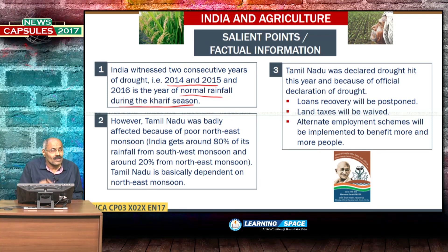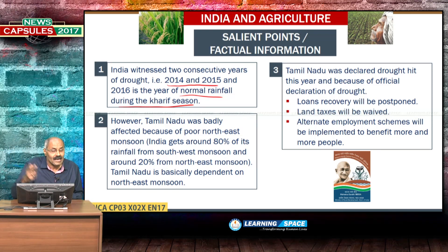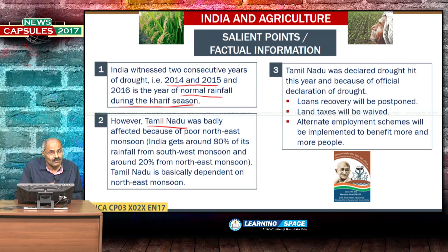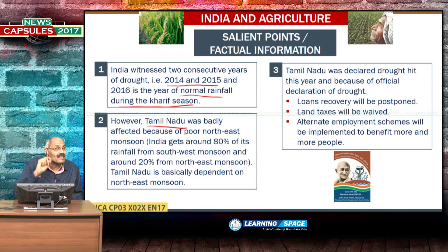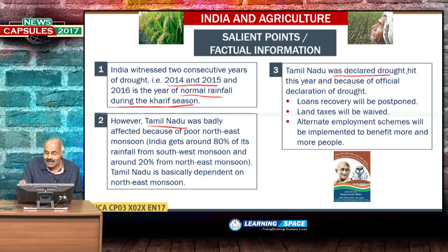India gets 80% of the rainfall from the south-west monsoon and around 20% from the north-east monsoon. Tamil Nadu, the southern state, is predominantly dependent on the north-east monsoon, and this year there was a failure of the north-east monsoon. The second reason is non-availability of water in the Kaveri river basin. Because of these two reasons, Tamil Nadu was badly affected and declared a drought state.